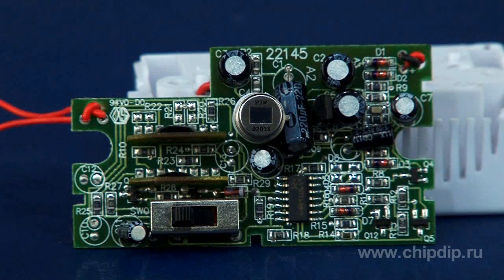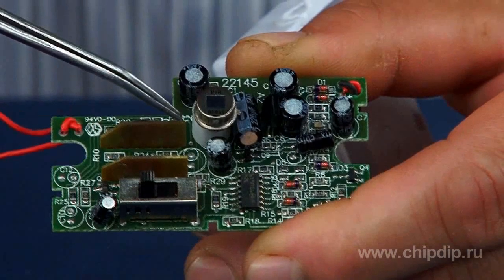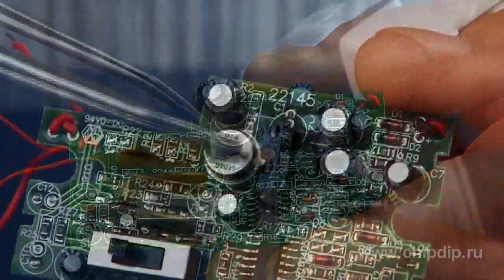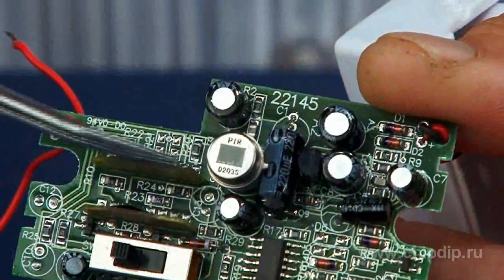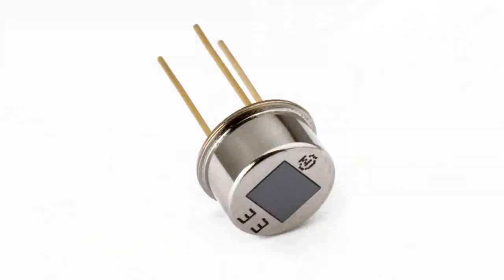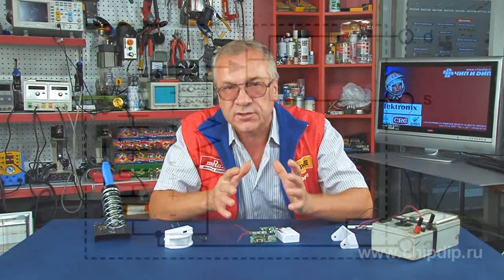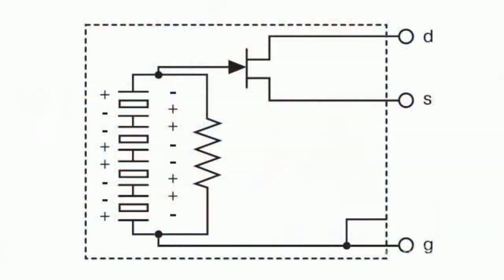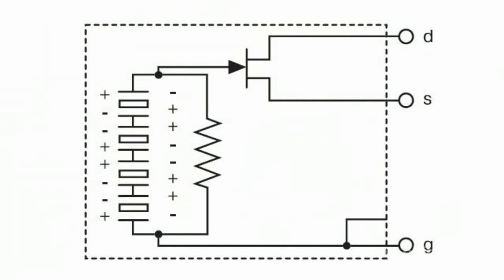Now let us look at the sensor design. The center of the device contains the signal processing circuit and encompasses an infrared light receiver — more precisely, a photoelectric infrared sensor. The main lens consists of many small lenses, each of which focuses the infrared light onto the photocell surface. With one of them directed onto the photocell itself, the signal is registered.